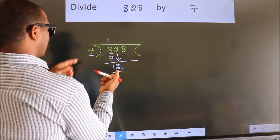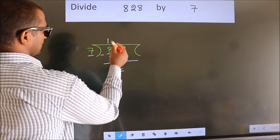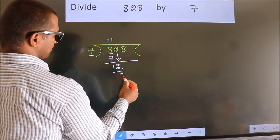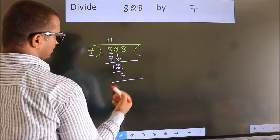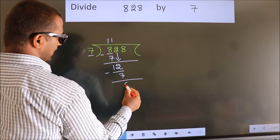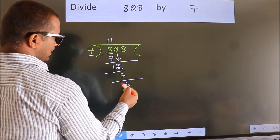A number close to 12 in 7 table is 7 once 7. Now we subtract. We get 5.